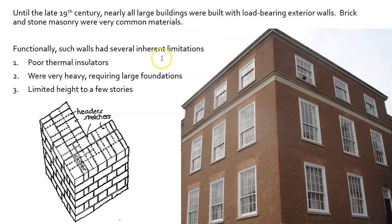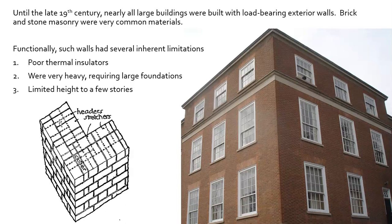Until the late 19th century, nearly all buildings had exterior walls of load-bearing masonry construction. That's what we see happening here — this kind of interlocking of the different masonry units. Here in Philadelphia, there are a lot of fantastic old historic buildings that have very heavy-duty masonry load-bearing walls.